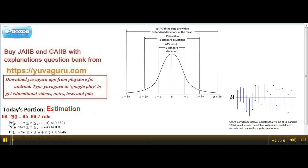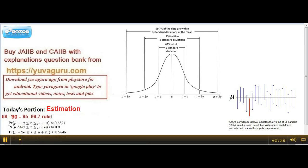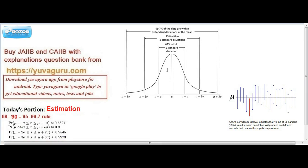Hi friends, today we will go through the 68-95-99.7 rule. These problems you normally get in estimation, and we don't understand what this rule actually means. What do you mean by 68% confidence, 95% confidence, or 99.7% confidence?